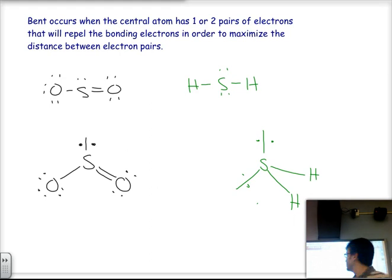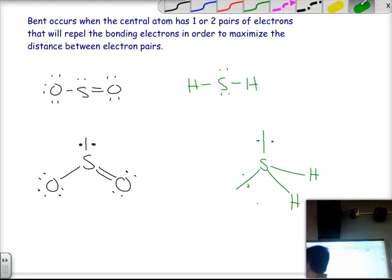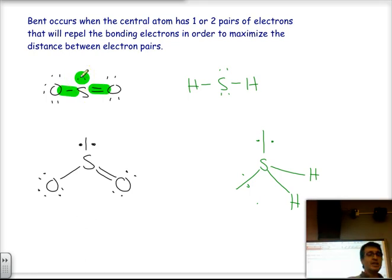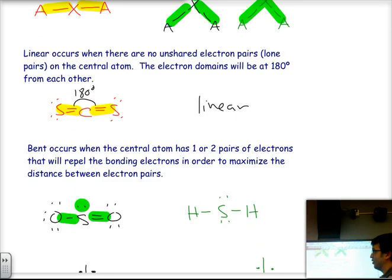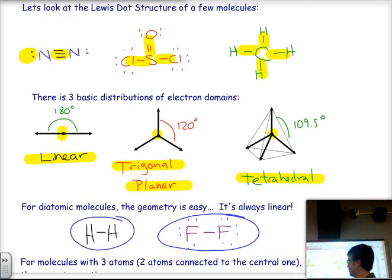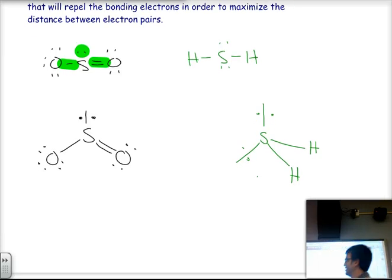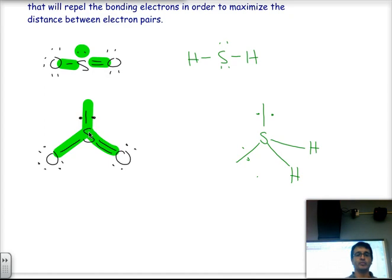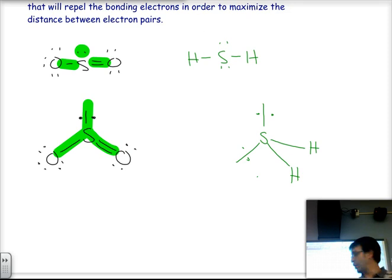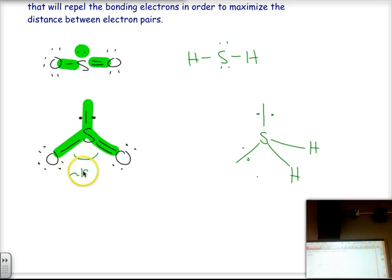In the case of sulfur dioxide (SO₂), we have one, two, and three directions around the central sulfur — three directions, which gives a trigonal planar distribution of electron domains. The lone pair occupies space and repels the bonding pairs, causing the angle between the bonds to be approximately 120 degrees.